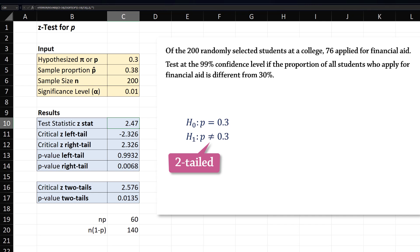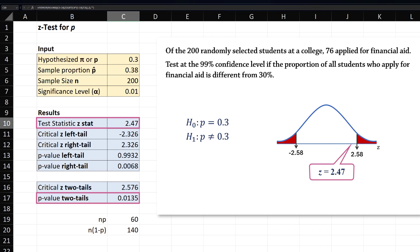Now, this is a two-tailed test, so using the critical value approach, we will reject the null hypothesis if z is less than negative 2.58 or greater than positive 2.58. The test statistic is 2.47, which does not fall into the critical or rejection region.